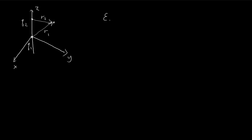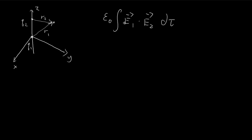In this problem we have to evaluate the integral epsilon times the electric field from the first component dotted with the electric field from the second component times a volume element. In order to do that we're going to have to find E1 and E2, so I've drawn out the diagram.